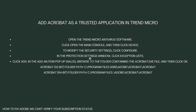In the Protection Settings window, click 'Exception Lists,' and lastly click 'Add.' In the 'Add an Item' pop-up dialog, browse to the folder containing the acrobat.exe file and then click OK. If you are using a 32-bit system, follow this path, and if you are using a 64-bit system, follow this one.